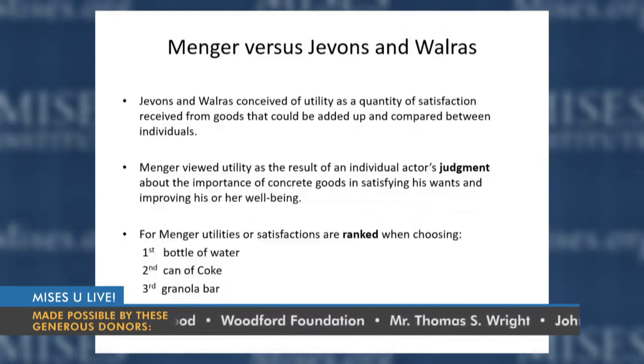There was a big difference between Menger and his approach to marginal utility versus Jevons and Walras, both of whom were mathematical economists. They thought of utility as a quantity — a quantity of satisfaction that could be added up and compared between different individuals. For example, a bottle of water might be worth five utils to me but ten to you because you're poorer, so the government should come in, take my bottle, and give it to you. The problem, of course, is: what is a quantity of utility? What the heck is a util? It doesn't make any sense.